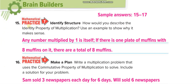How would you describe the identity property of multiplication? Any number multiplied by 1 is itself — it gives you the same number. For example, if there is one plate of muffins with 8 muffins on it, there are 8 muffins total. Just one plate, so the number stays the same.